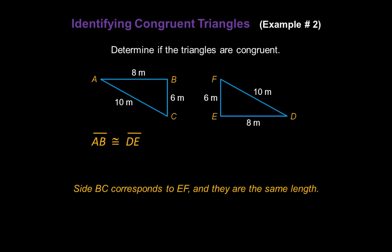Now it looks like side BC in the first triangle corresponds with EF in the second triangle, and we notice they're the same length as well. They're both 6 meters. So we can write that those line segments are congruent as well. Line segment BC is congruent with line segment EF.